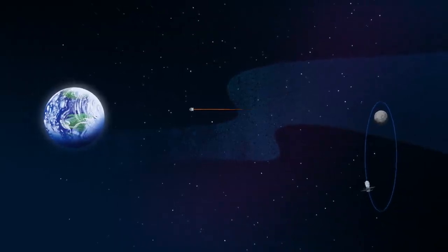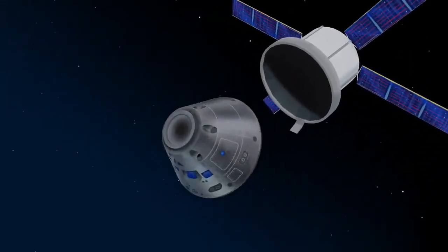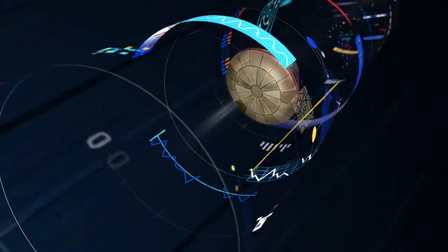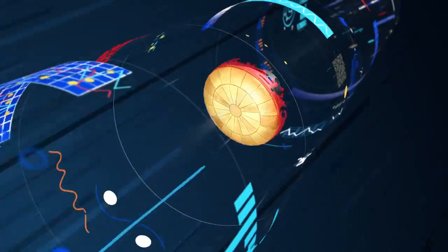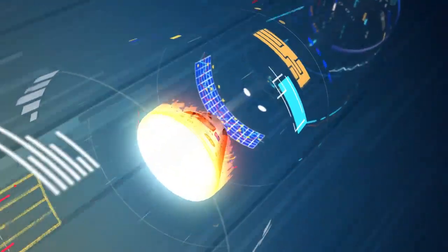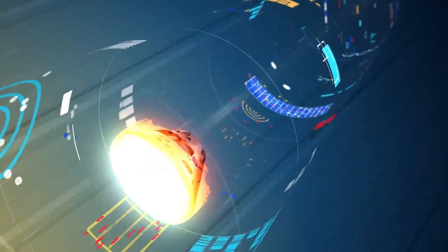As they near the end of this journey, the service module is released, and the crew module is oriented heat shield first. Entering Earth's atmosphere at 25,000 miles per hour, the friction of air slows Orion considerably, while also subjecting it to temperatures of 5,000 degrees.